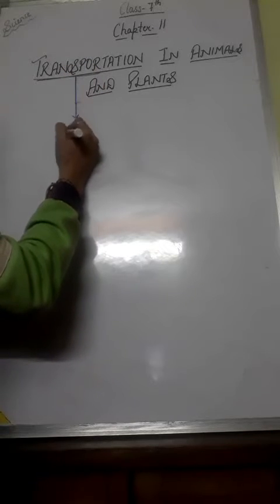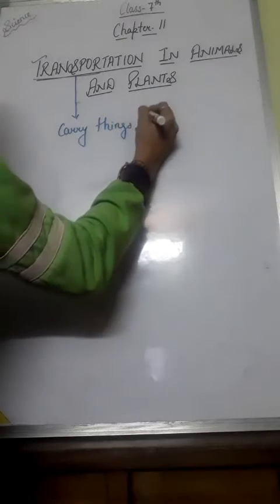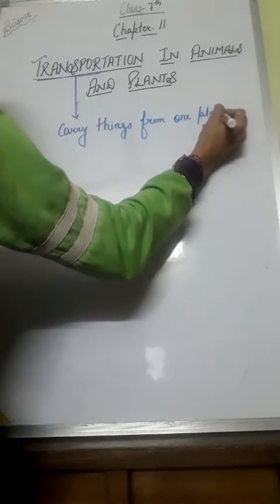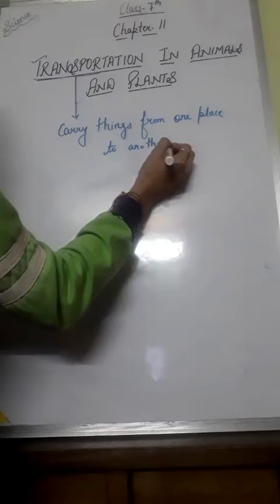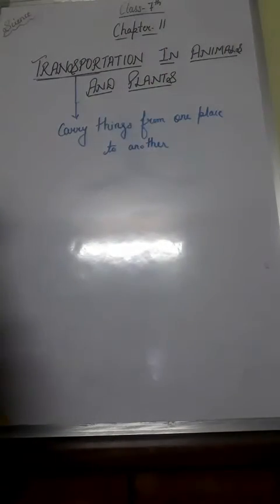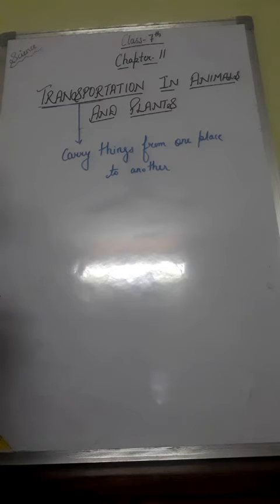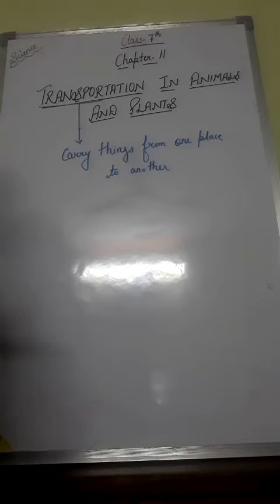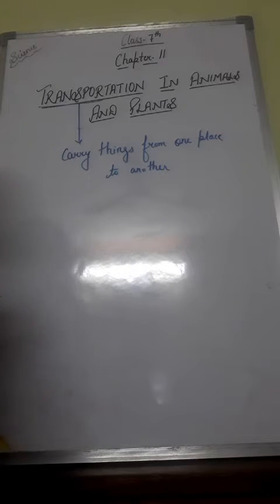Transport means to carry things from one place to another. We are going to discuss about the transportation in animals and plants. The body of an organism requires nutrients and oxygen to carry out various life processes. Waste products produced due to the various functions inside the body also need to be transported or removed. Therefore, the term transport may be defined as the life process in which a material is absorbed in one part of an organism and is carried to other parts in its body.